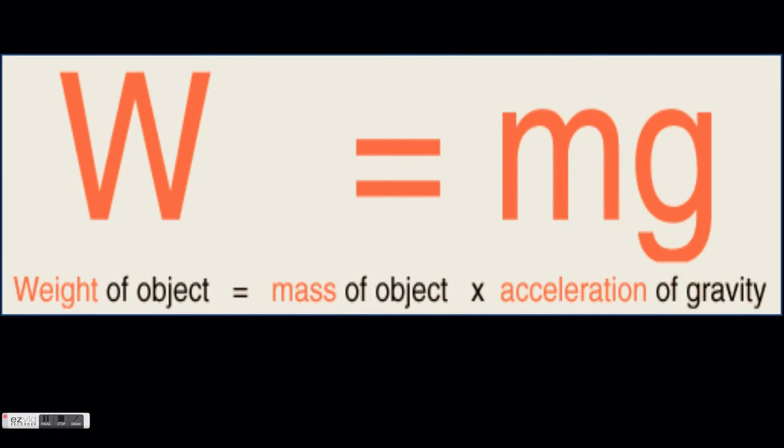Here you can see the formula used to calculate mass and weight. W is the weight of an object, M is the mass of an object, and G is the gravity on the planet.